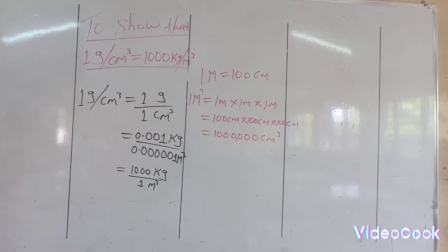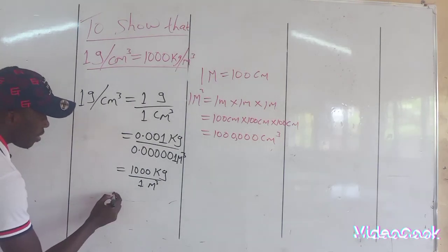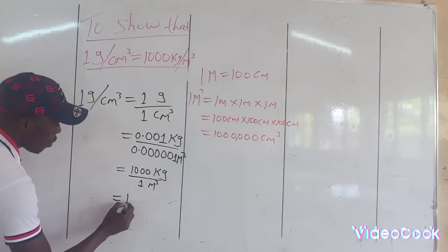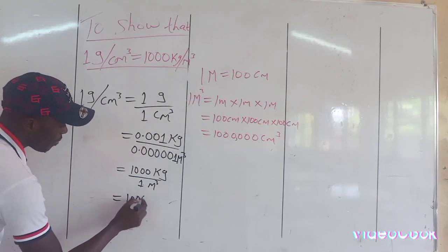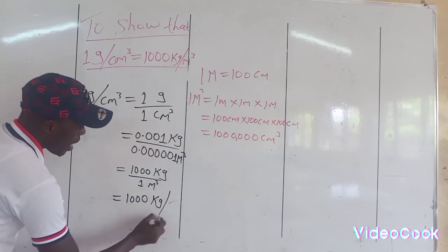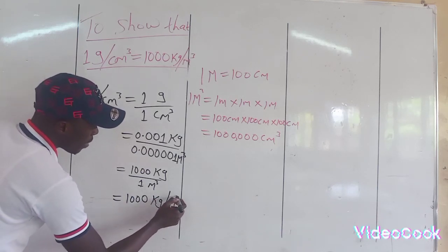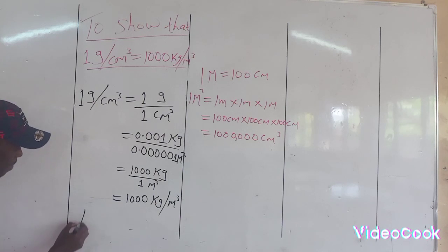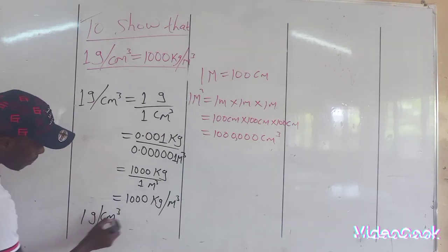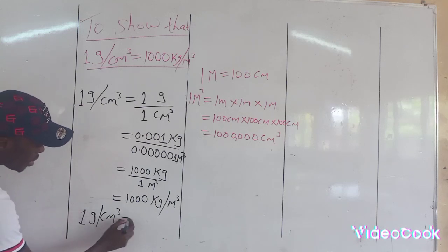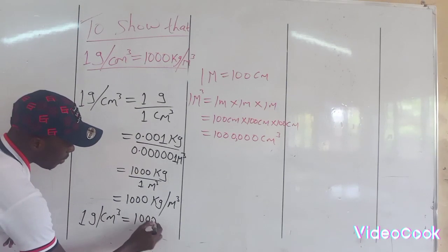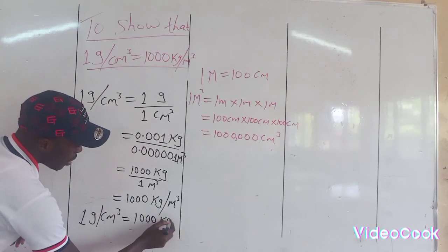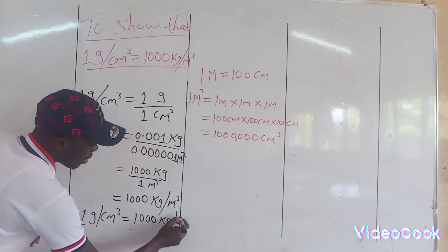And this implies 1,000 kilogram per every cubic meter, and that simply translates: 1 gram per cubic centimeter is equal to 1,000 kilogram per cubic meter.